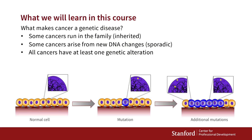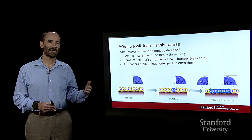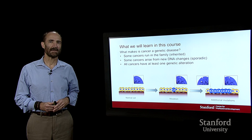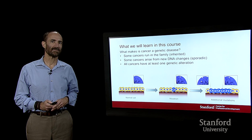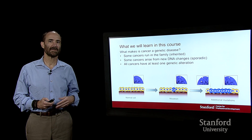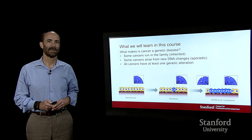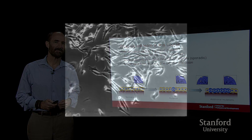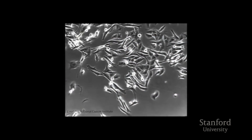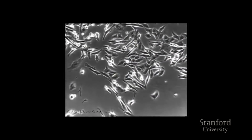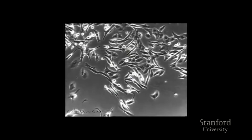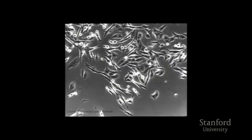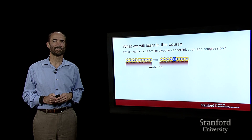What we're going to learn in this class is why cancer is a genetic disease. Some cancers run in the family — they're inherited. Other cancers arise strictly from new DNA changes. In any event, all cancers have at least one genetic mutation that's responsible for driving cells to grow uncontrollably.